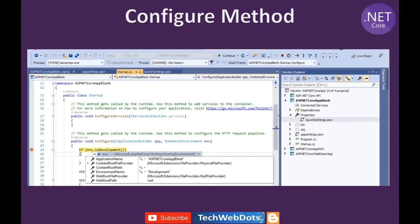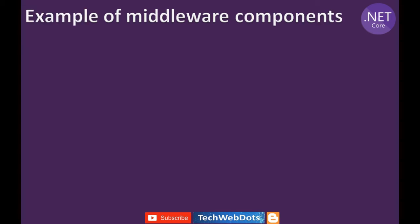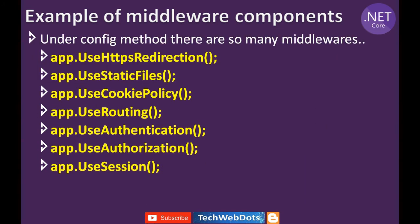For your understanding, I'm showing the startup.cs file — this is an example from a blank ASP.NET Core project I have created. In the Configure method, the IApplicationBuilder object is used to call any middleware components. Examples of middleware components include UseHttpsRedirection, UseStaticFiles, cookies, routing using app.Use, and you can also create your own middleware component. Authentication and authorization components are also available.